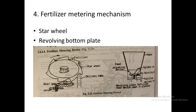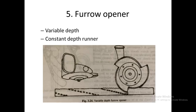The fourth component is the fertilizer metering mechanism. There are two types: the star wheel and the revolving bottom plate. These have already been discussed during the lecture on seed drill.